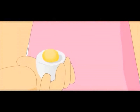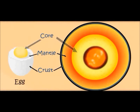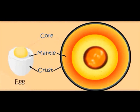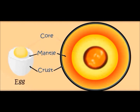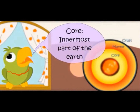This is another layer of the egg. Yes, like the egg, Earth also has another layer. It is called the core. The core — it is the innermost part of the Earth. Core! Innermost part of the Earth!